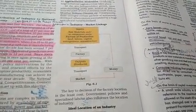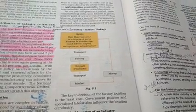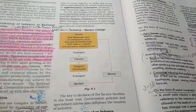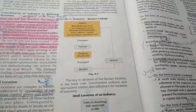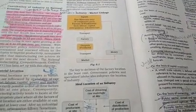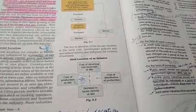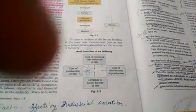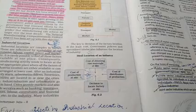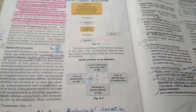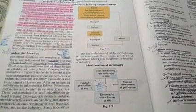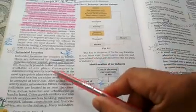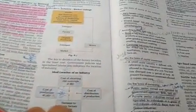यहाँ पर देखें — industry के लिए ideal location के factors, जो chart दिया गया है उसमें देखें कि industry के लिए कौन-कौन से ideal location factors होने चाहिए। In last videos we also discussed about industrial location. We can divide these factors into physical and human factors — physical या human factor में भी हम लोग इनको divide कर सकते हैं।